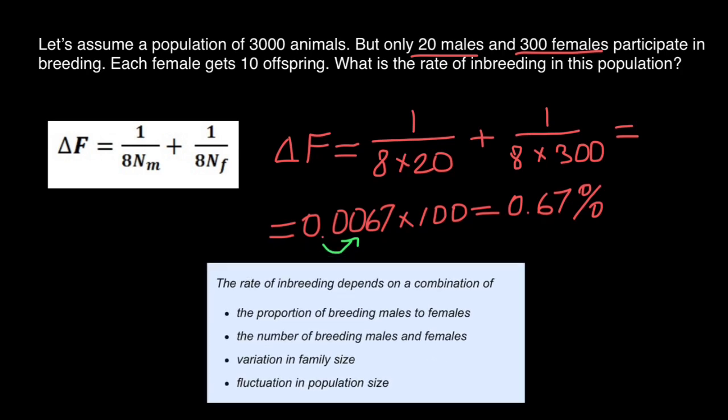In this table is a summary of what I have said. So one more time, the rate of inbreeding depends on a combination of the proportion of breeding males and females. It's better to have 160 males and 160 females, so in this case inbreeding would be less. Next, the number of breeding males and females. Again, it's better to have 100 males and females than 10 males and 10 females. In this case, inbreeding would be higher because we have a smaller number of animals.